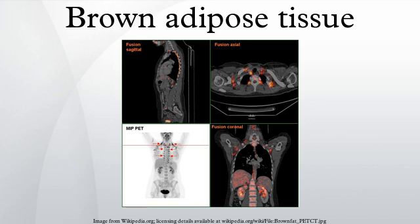Brown adipose tissue, or brown fat, is one of two types of fat found in mammals. It is especially abundant in newborns and in hibernating mammals. Its primary function is to generate body heat in animals or newborns that do not shiver. In contrast to white adipocytes, which contain a single lipid droplet, brown adipocytes contain numerous smaller droplets and a much higher number of mitochondria, which give it its brown color. Brown fat also contains more capillaries than white fat, since it has a greater need for oxygen than most tissues.